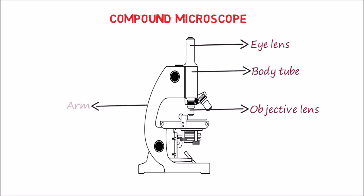The body consists of an arm connected to a strong base. The coarse and fine adjustment knobs allow the lenses to slide in the body tube to bring the object into focus.